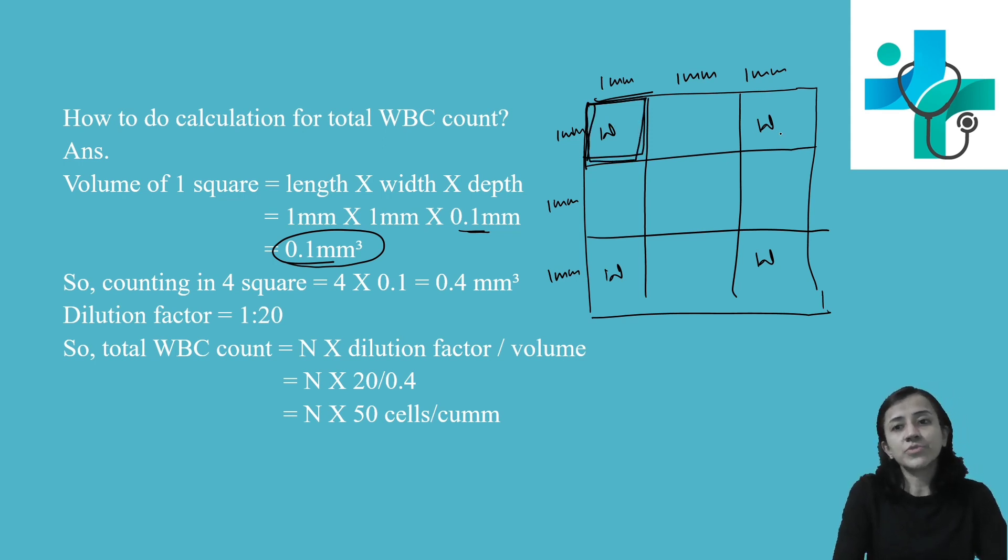So volume of these four squares would be 0.4 millimeter cube. Now you can say that in 0.4 millimeter cube, our count is N. So in 1 millimeter cube, the count is N times 1 divided by 0.4.